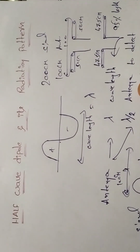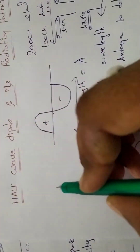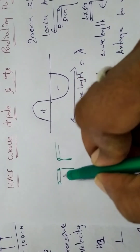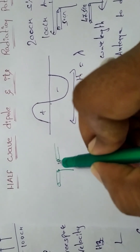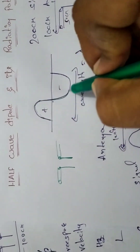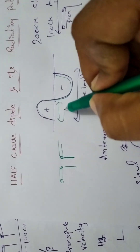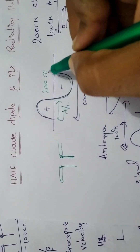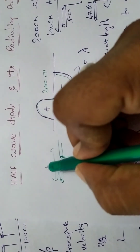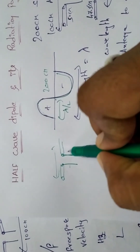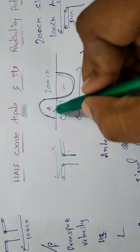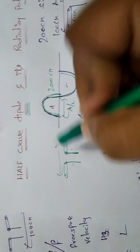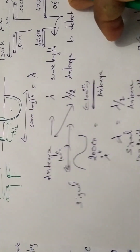So we have a half-wave dipole with two poles — this is a 2-pole dipole. If one full wavelength is 200 cm, we take the full wave. The 100 cm length goes to each end. The two poles form the dipole, and the total length is half the wavelength.